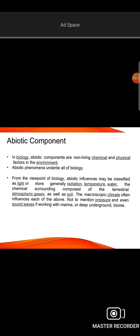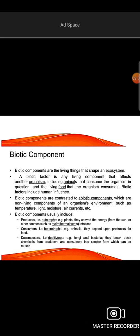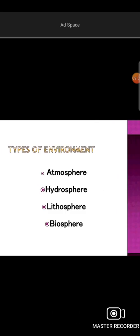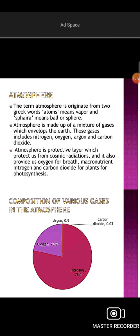Abiotic factors include radiation, temperature, water, atmosphere, and gases. Biotic factors involve animals and other living organisms in the environment. In the American classification, we will look at the atmosphere and its layers.